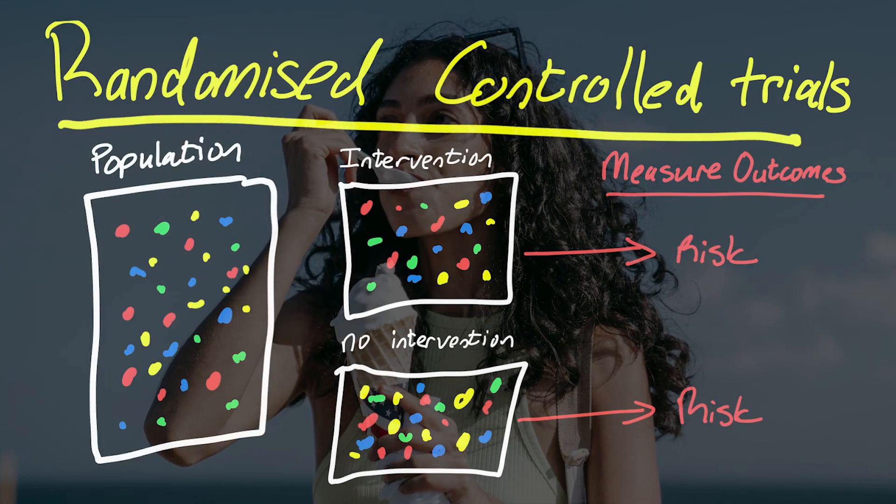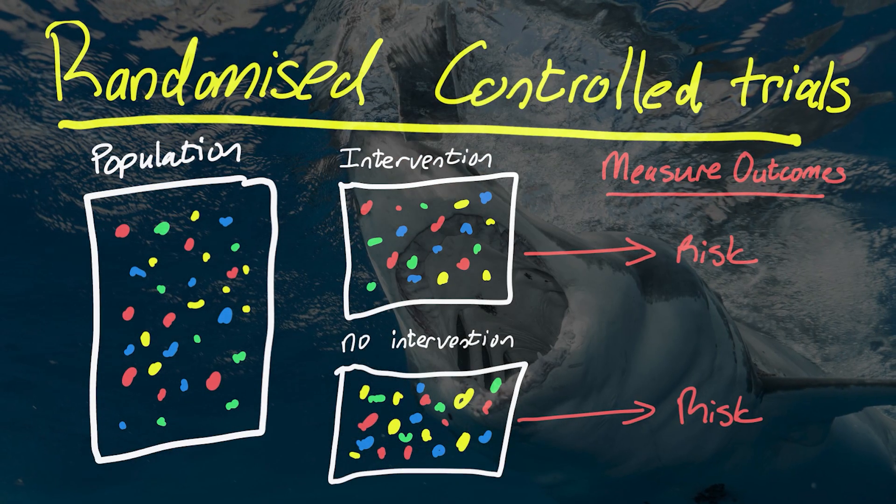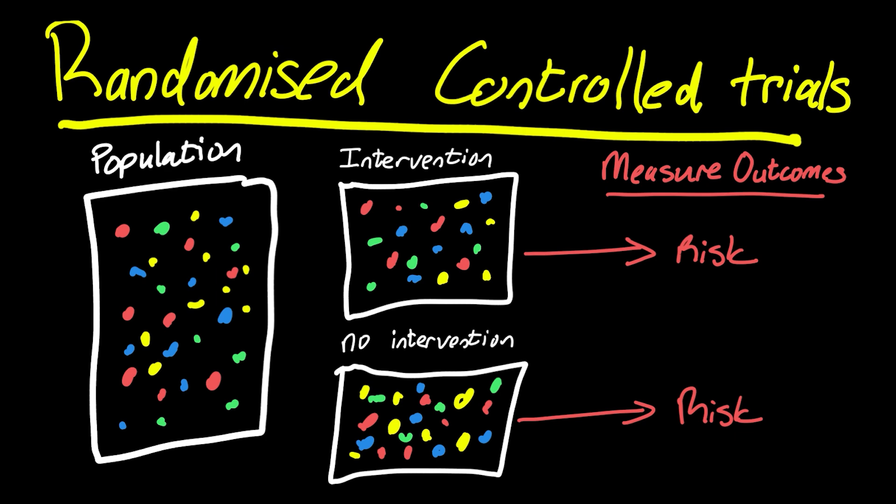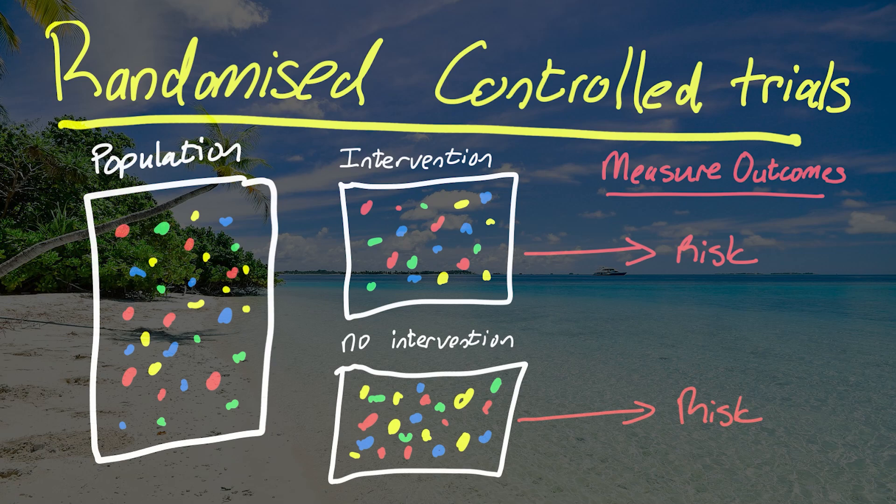So does eating ice cream make people more likely to be attacked by a shark? No. But there is a relationship between ice cream eating - the number of people that eat ice cream and the number of people that get eaten by shark attacks - there's a correlation. But that correlation isn't real. They're both associated with warm weather.